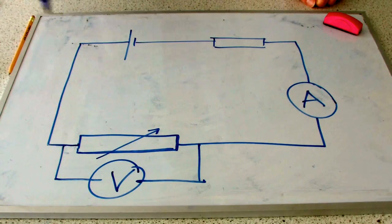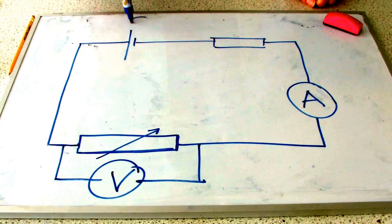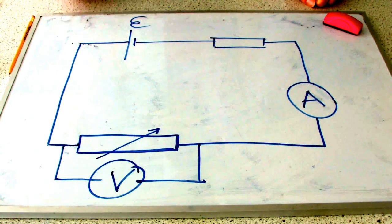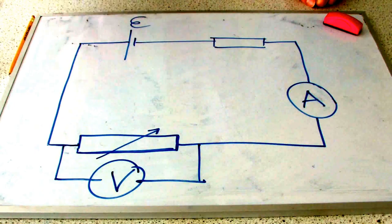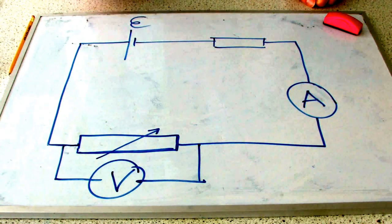The circuit diagram we're going to use is this one here. We've got our source of electromotive force, our EMF here, which is just going to be one simple single dry cell, a 1.5 volt cell.